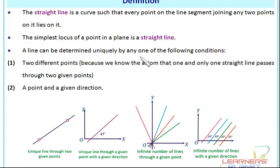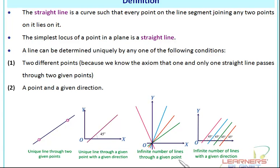A line can be determined uniquely by any one of the following conditions: two different points, and a point in a given direction. From two fixed points, only one line can pass. For a unique line through a given point with a given direction — if the angle is 45 degrees and in that direction, through a particular point only a single line can pass. Similarly, infinite lines can pass through a given point, and infinite lines can pass in a given direction — for example, all lines making 45 degrees with the OX axis but passing through different points.